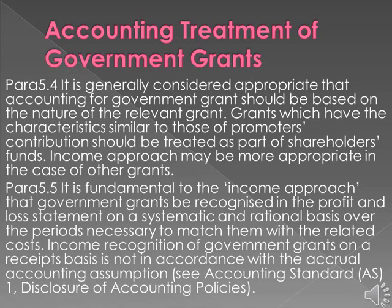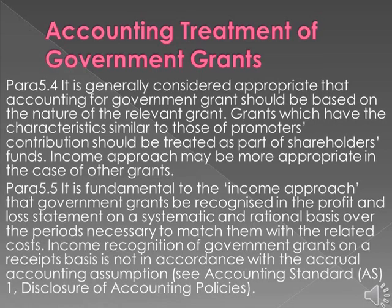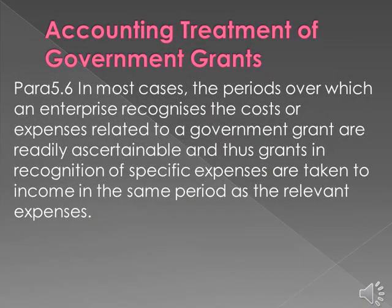Para 5.5: It is fundamental to the income approach that government grants be recognized in the profit and loss statement on a systematic and rational basis over the periods necessary to match them with the related costs. Income recognition of government grants on a receipts basis is not in accordance with the accrual accounting assumption — see Accounting Standard AS 1: Disclosure of Accounting Policies. Para 5.6: In most cases the periods over which an enterprise recognizes the costs or expenses related to a government grant are readily ascertainable, and thus grants in recognition of specific expenses are taken to income in the same period as the relevant expenses.